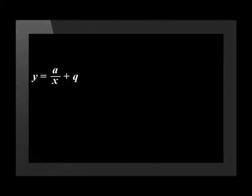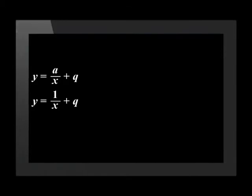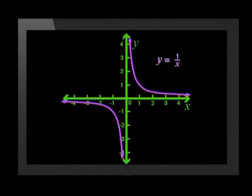We started this lesson by saying we want to investigate the changes in a as well as in q, for functions of the form y equals a over x plus q. We have seen the effect of a. Now we need to study the effect of changing q. To make things simple, let's keep the value of a at 1 while we change the value of q.